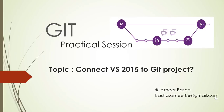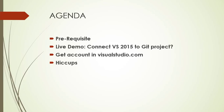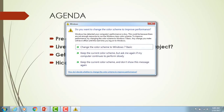Good morning everyone, this is Amir Basha and welcome to the series of Git practical sessions. In the previous session we talked about the overview of Git. In this session I'm going to show you how to connect Visual Studio 2015 to an existing Git project. The main agenda is: prerequisites required for Visual Studio 2015 to connect to a Git project, a live demo of how to connect, and how to get an account to create a Git project.